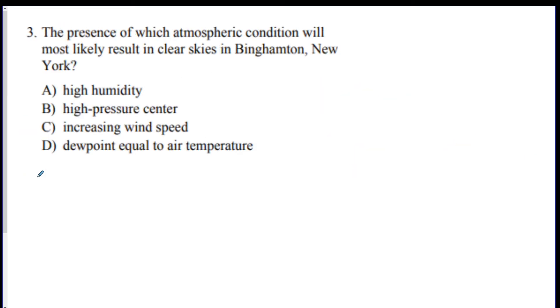Number three. The presence of which condition will most likely result in clear skies? Another way to say clear is fair weather or not cloudy. So that's going to be high pressure, B. High humidity, that's a low pressure thing and that's going to bring you rain. Increasing wind speed, that means there's some type of storm probably. The dew point to the air temperature, that means you're going to get clouds. So the other three are wrong. It's not going to give you clear skies.